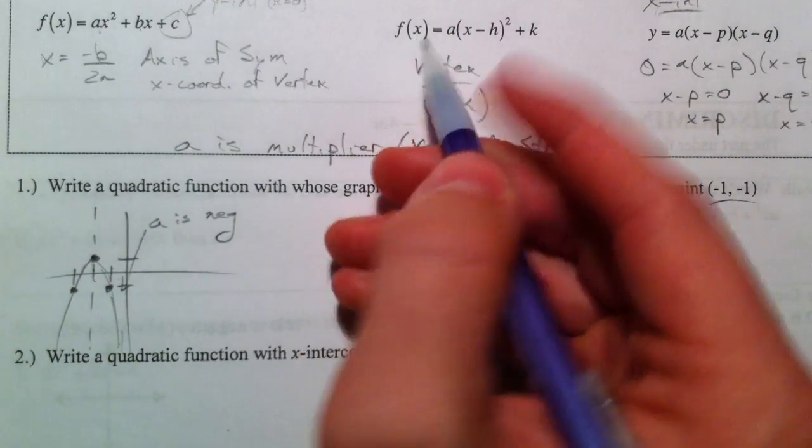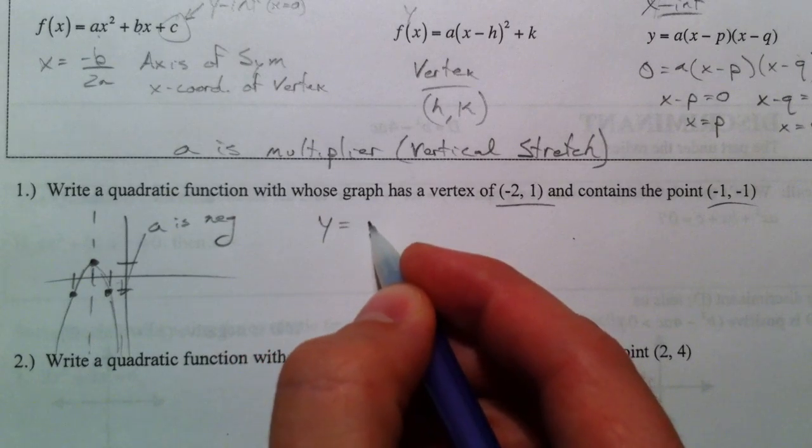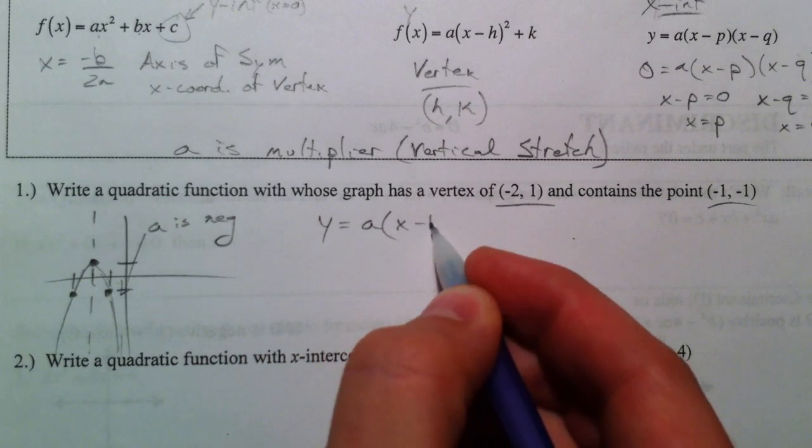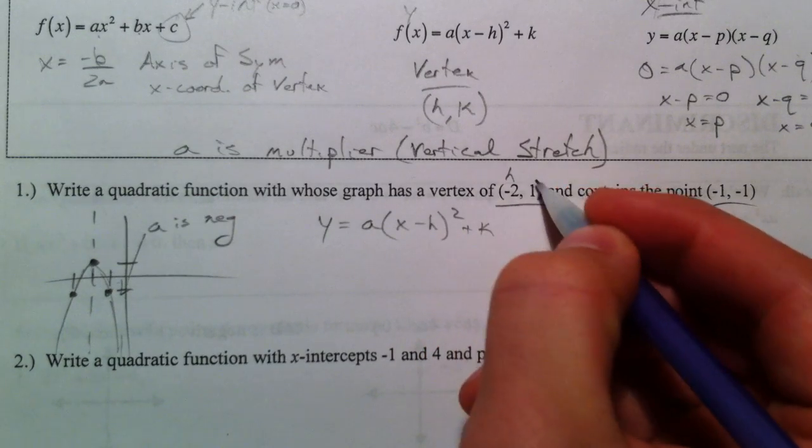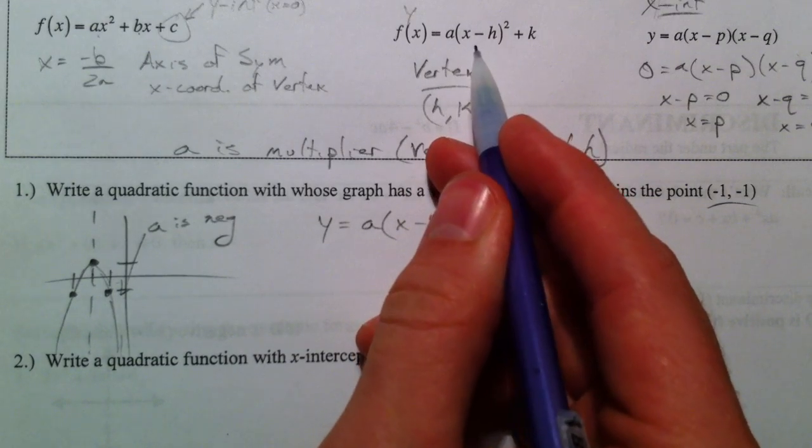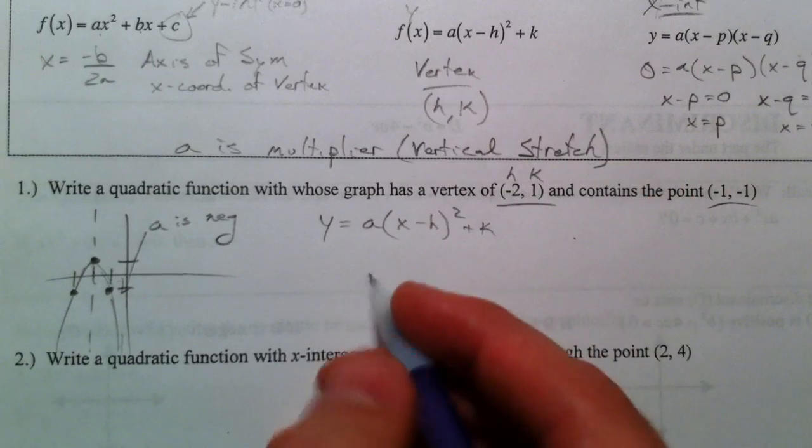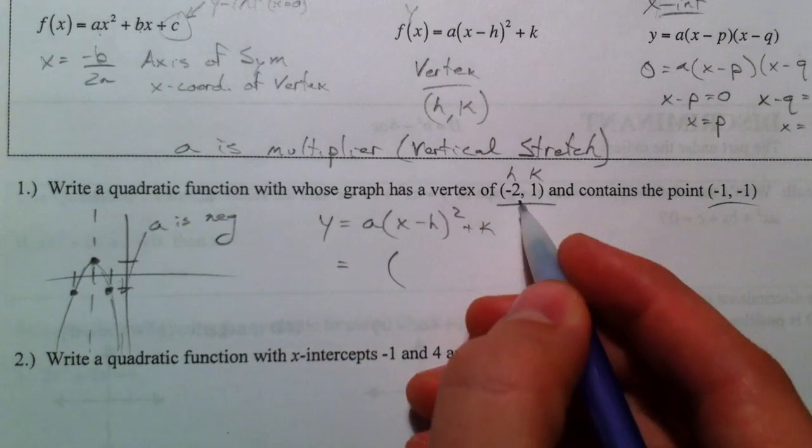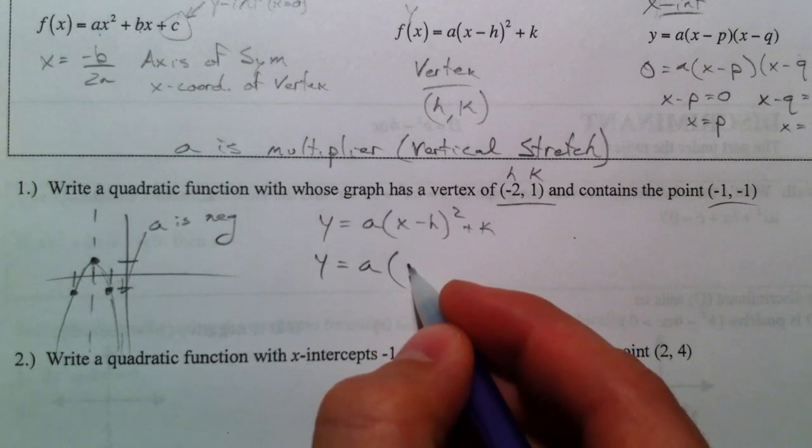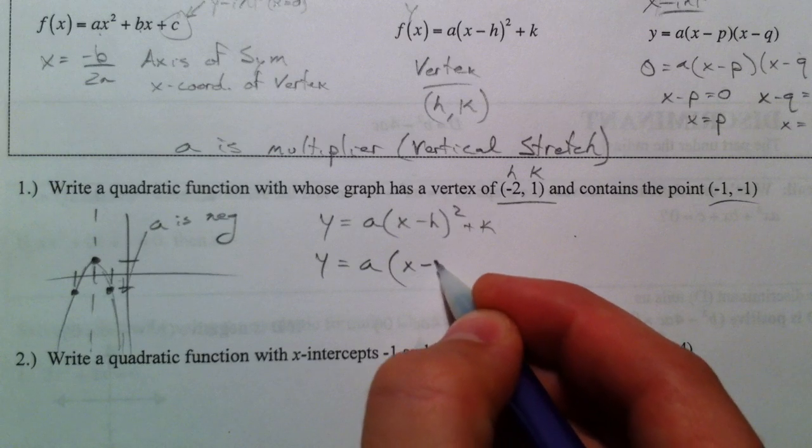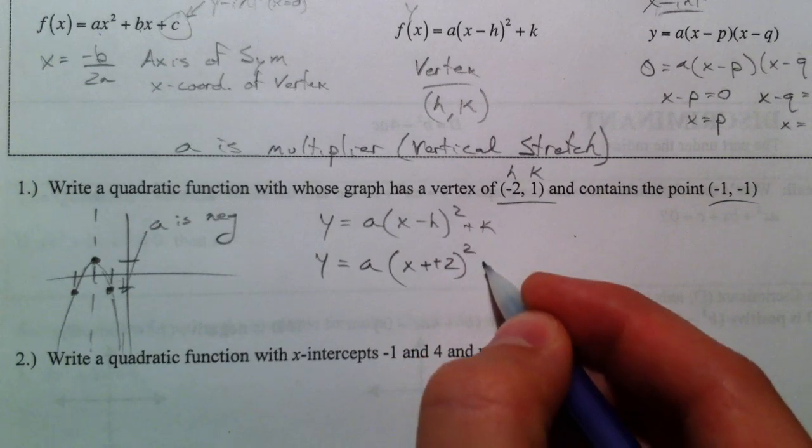Now I have f of x here, but really that's just like y, remember. So y equals a times x minus h squared plus k. Remember, this is our h and our k. The number with the x always did the opposite of what we thought, and k always did exactly what we thought. So what we're going to do is plug in what we know. X minus a negative 2, so that's really plus 2 squared plus 1.